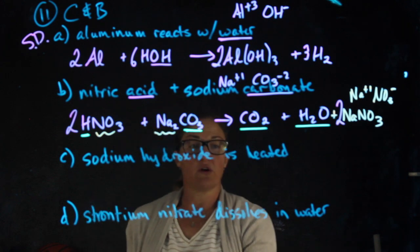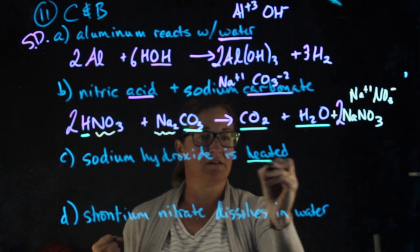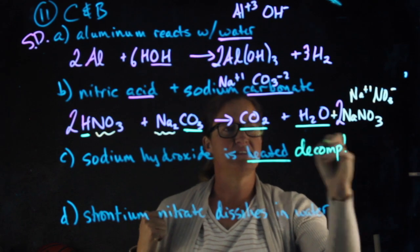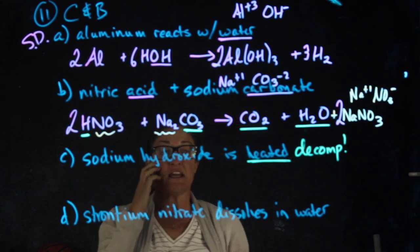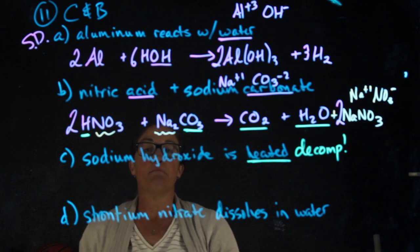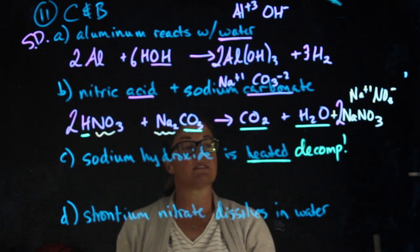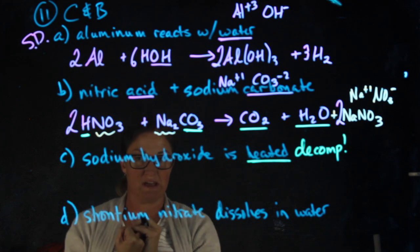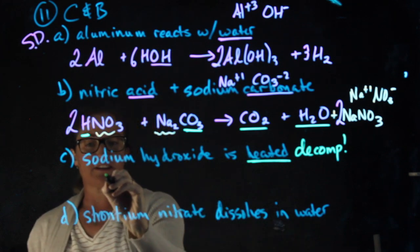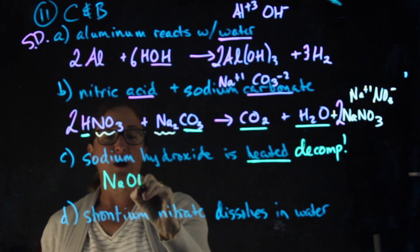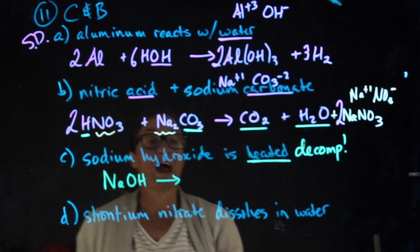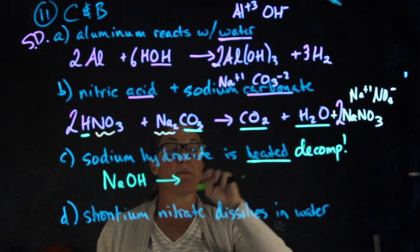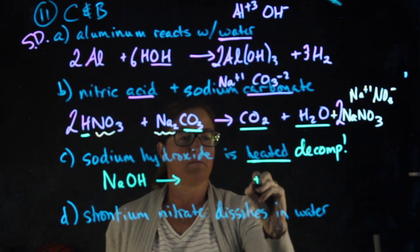The third reaction, sodium hydroxide is heated. When I see heated, that's telling me this is a decomposition. This is a decomposition of a hydroxide, making it one of our special reactions that, like the acid carbonate, you have a clue to on your reaction cheat sheet. Sodium hydroxide is NaOH. When a hydroxide is heated, we start with a metal hydroxide and end with a metal oxide plus water.